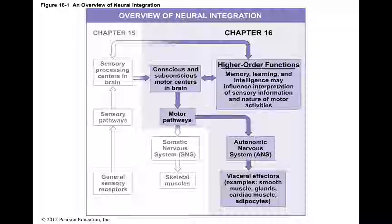If we look at this diagram, we can see that once the brain sends out a command, it goes either through the somatic nervous system via motor pathways to skeletal muscle, or if the brain wants to send a command to anything else, it goes through the motor pathways and then through the autonomic nervous system. The effectors are everything other than skeletal muscle.